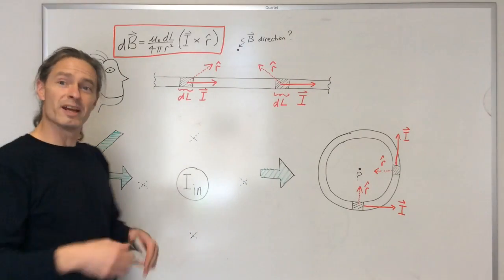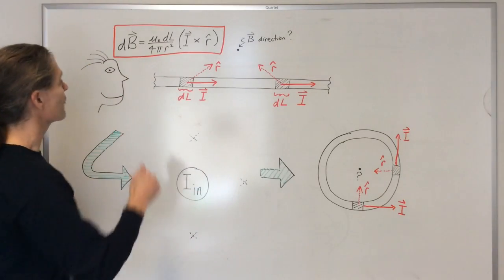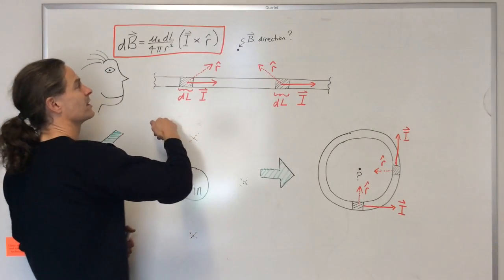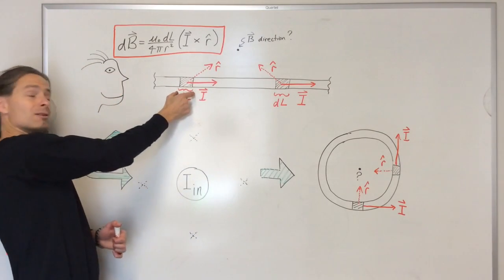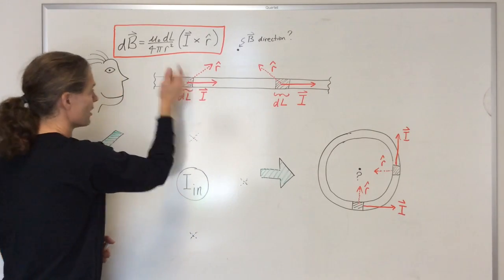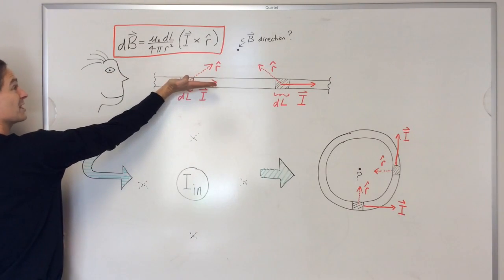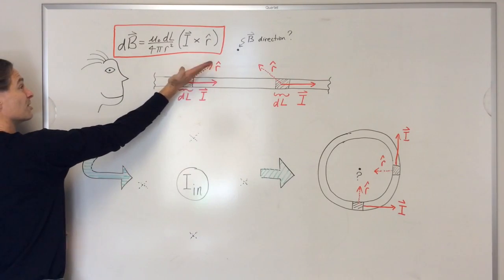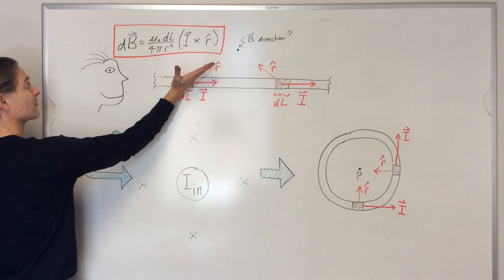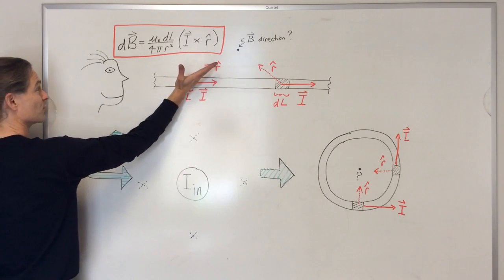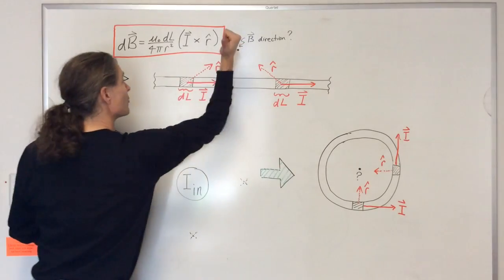There are a few different ways of implementing the right-hand rule; I'll show you two of them. If I want to find the direction of the magnetic field contribution made by this little current element, I stick the fingers of my right hand in the direction of the first vector of the cross product — that is the i vector — curl them into the r-hat unit vector, and my thumb points in the direction of the magnetic field contribution produced at this location. That direction is out of the board.